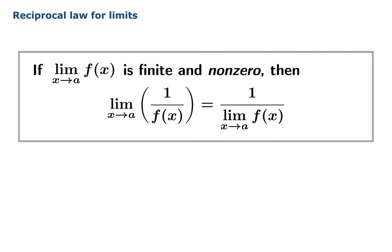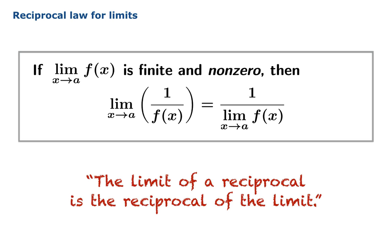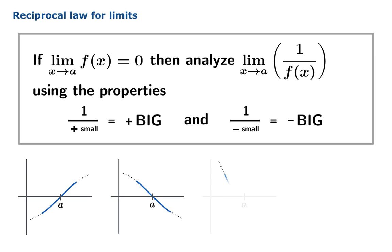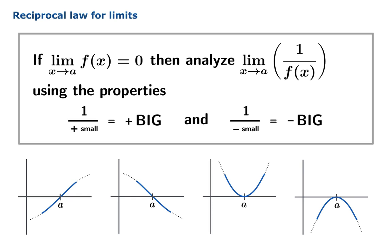In summary: the limit of a reciprocal is the reciprocal of the limit. If the limiting behavior of f is 0 as x approaches a, then to analyze the limiting behavior of the reciprocal, use the property that the reciprocal of a small magnitude number is big. You have to pay attention to the signs and to which side of the argument you're approaching. There are four qualitative cases — you could memorize them, but it's probably best to just be agile enough to reproduce these results as you need them.